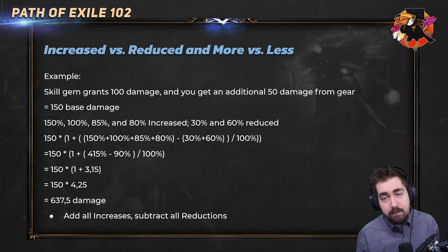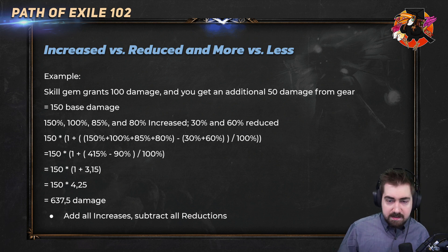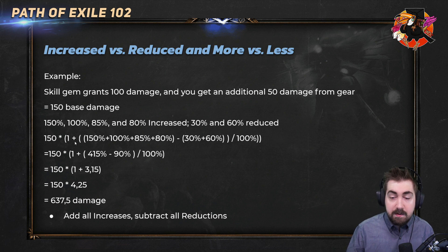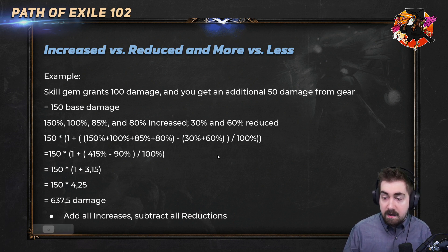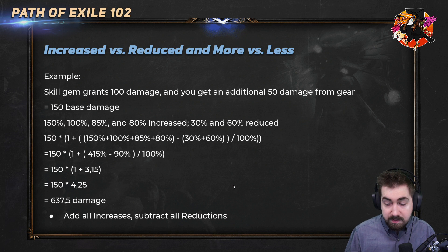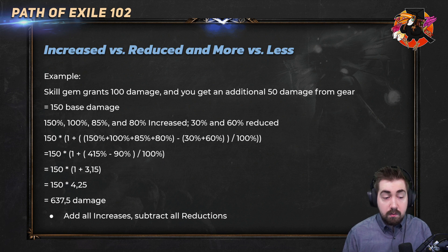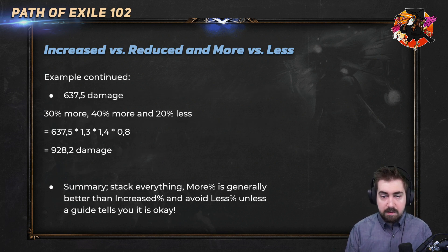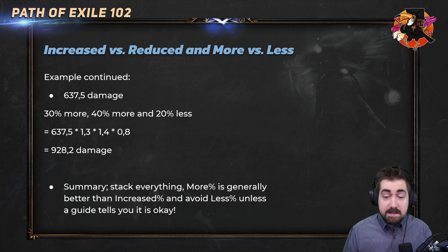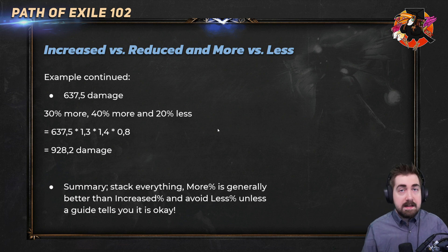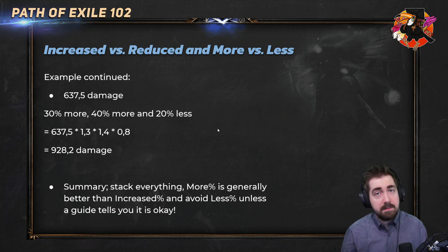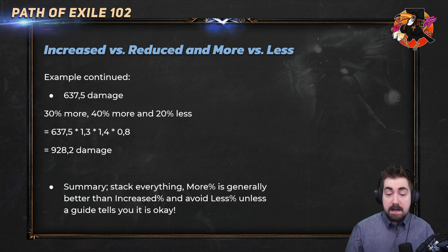The final outcome from those modifiers is 637.5 damage. You add all the increases, subtract all the reductions, and multipliers are just so incredibly strong — they skyrocket your damage. Now if we get 30% more and 40% more, you can see it multiplies by 1.3 and by 1.4, and then multiplies by 0.8 for 20% less damage. That's why getting 20% less damage might not seem like a lot, but it is a huge amount. We end up with 928 damage.